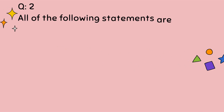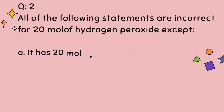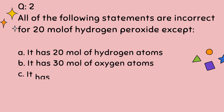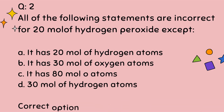Question number 2. All of the following statements are incorrect for 20 moles of hydrogen peroxide, except. A. It has 20 moles of hydrogen atoms. B. It has 30 moles of oxygen atoms. C. It has 80 moles of atoms. D. 30 moles of hydrogen atoms. Correct option is C.